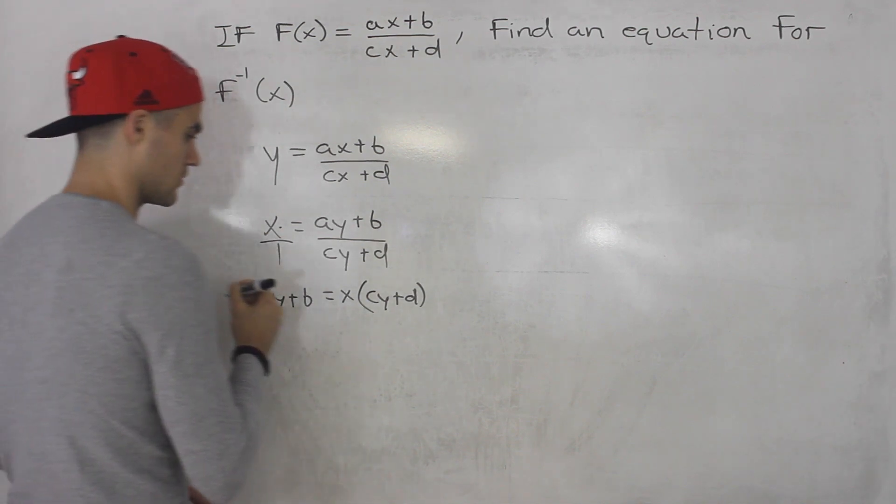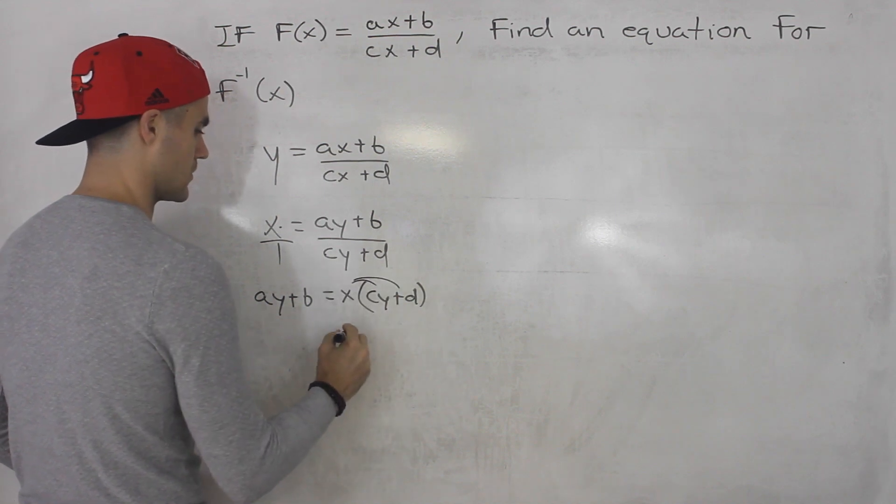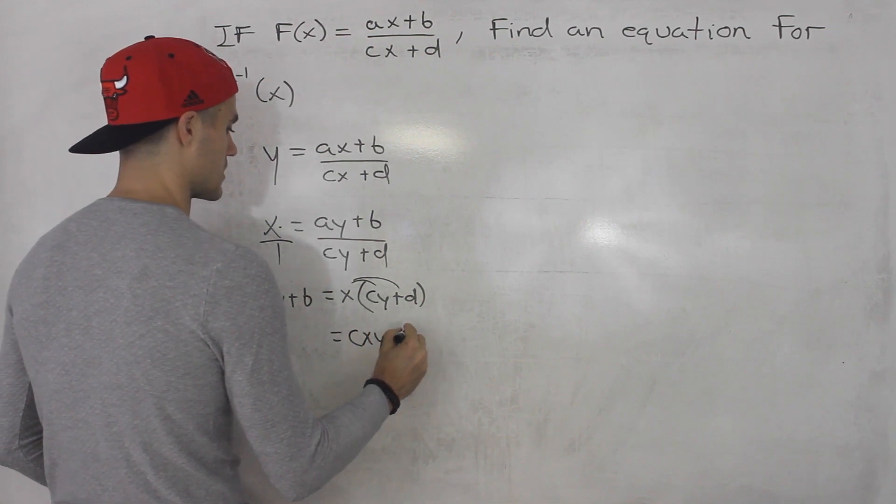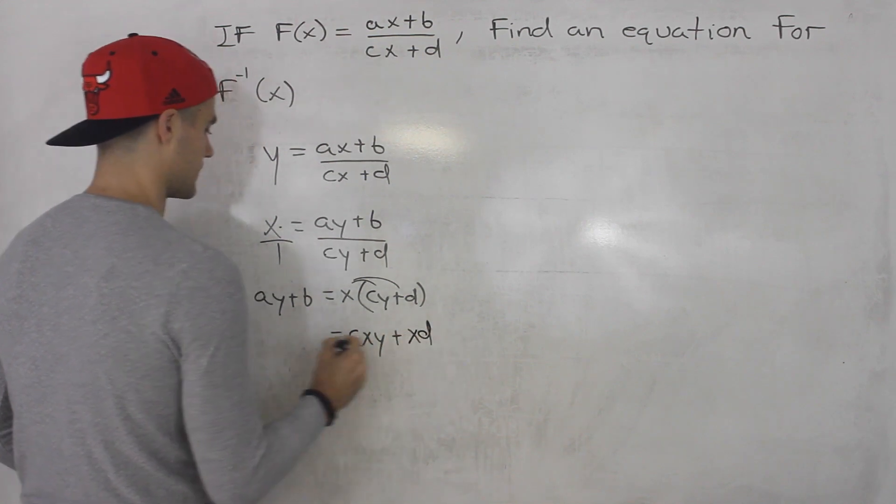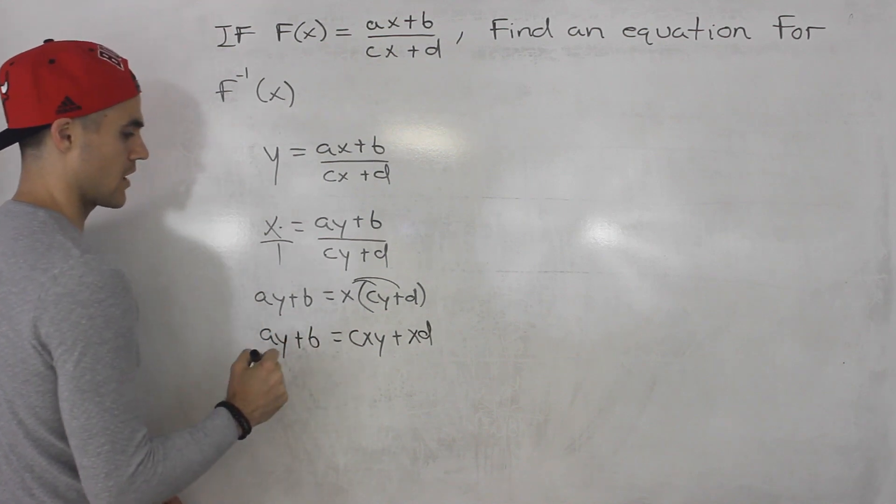So from here what you want to do is you want to distribute the x inside the bracket. So we would end up with c x y plus x d and then over here on the left side is still a y plus b.